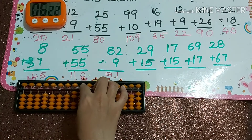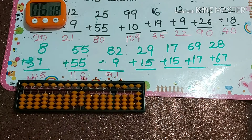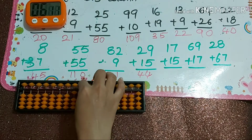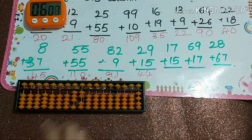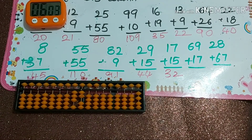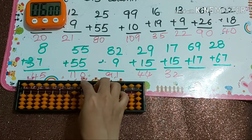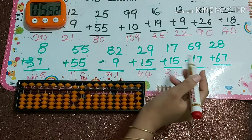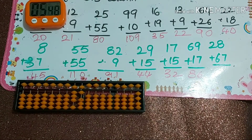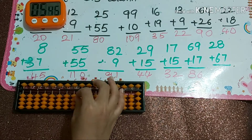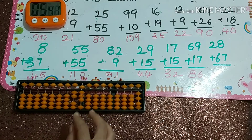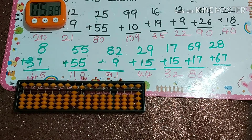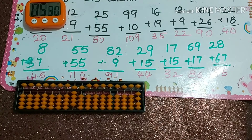Next: 29 plus 15. For 5, use plus 10 minus 5, answer is 44. Next: 17 plus 15 — plus 10 minus 5 — answer is 32. Next: 69 plus 17 — plus 10 minus 3 — answer is 86. Next: 28 plus 67 — plus 10 minus 3 — answer is 95.